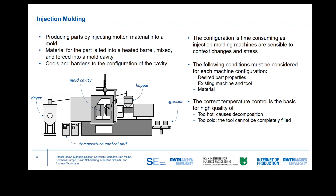Injection molding is a highly automated mass production process. It works by injecting a molten plastic material into a mold under high pressure, waiting until it cools and hardens, taking on the configuration of the mold cavity. The configuration of the injection molding process is time-consuming, since manual experiments are necessary to determine ideal parameter settings for producing high-quality parts. For example, temperature is a sensitive value: too high may cause decomposition, while too low means the mold is not completely filled. Injection molding thus serves as the use case in our paper.